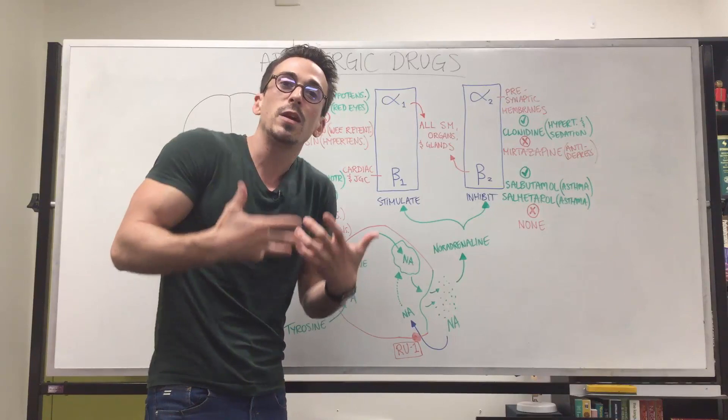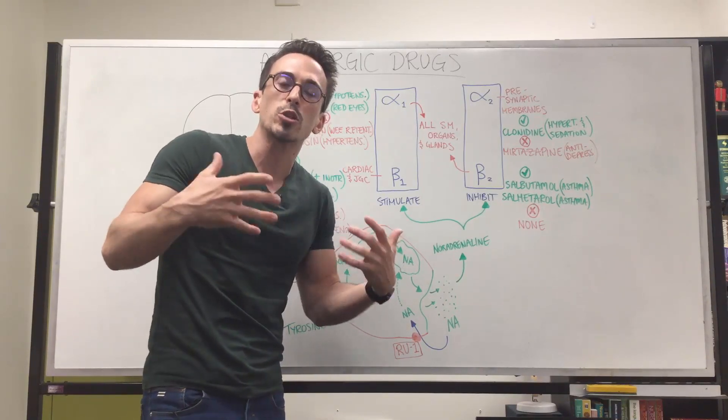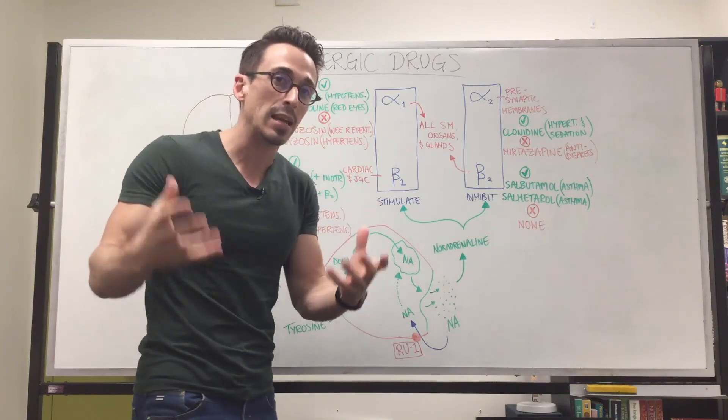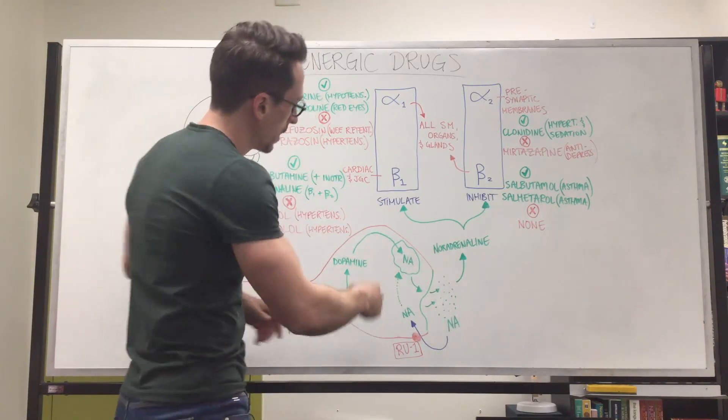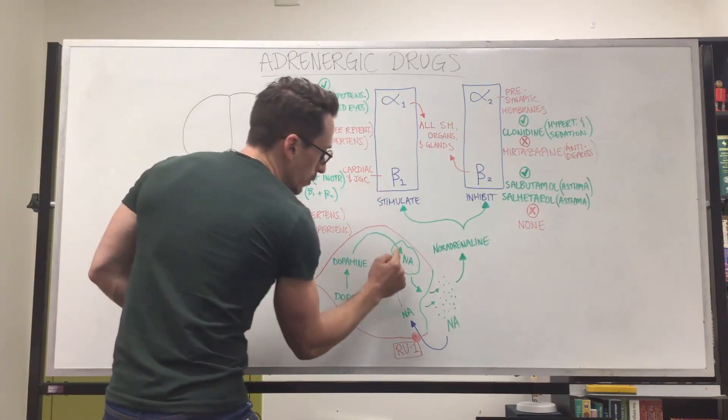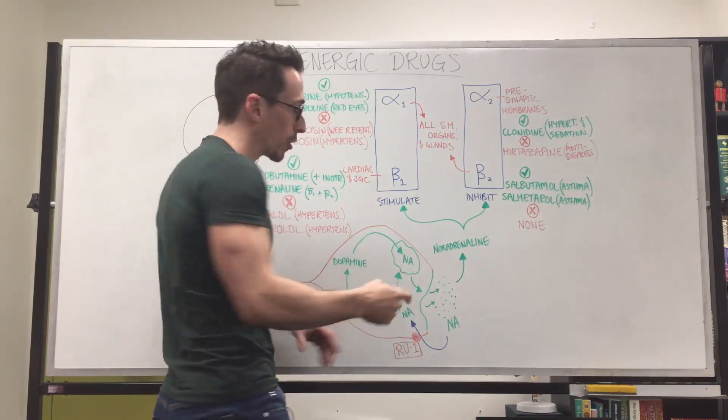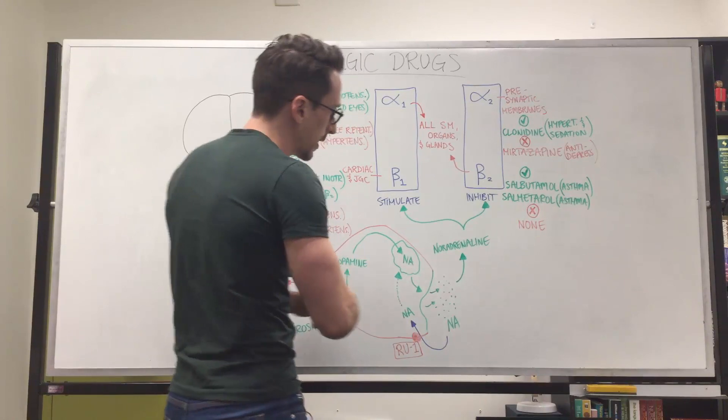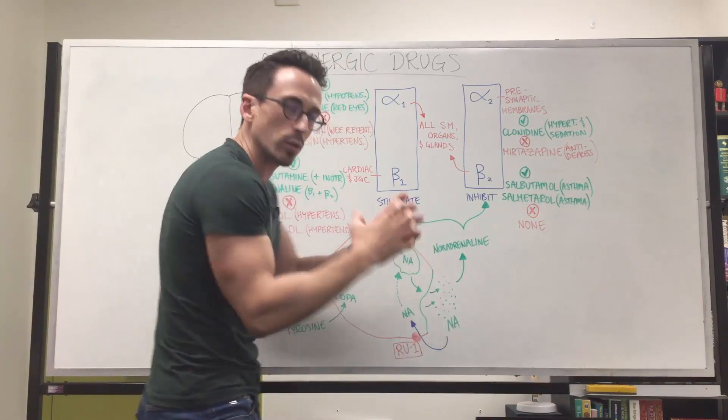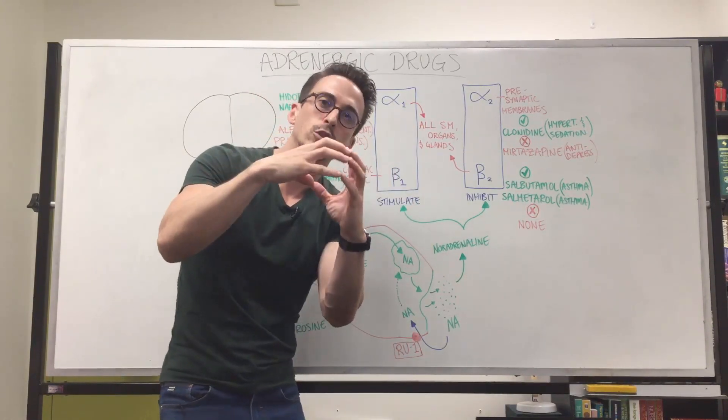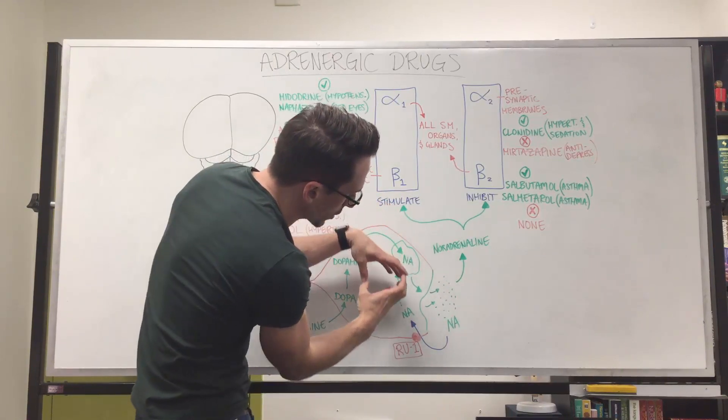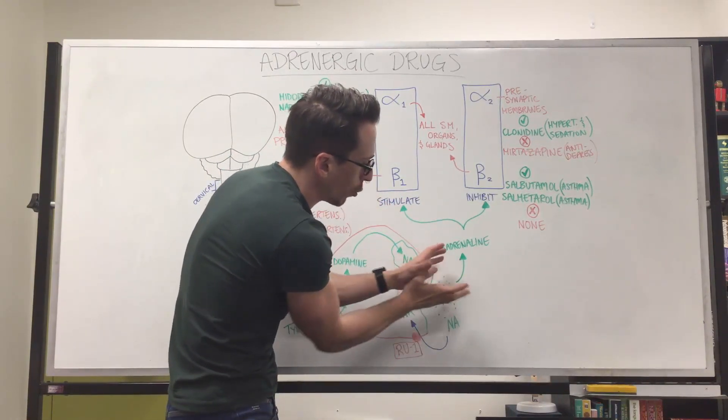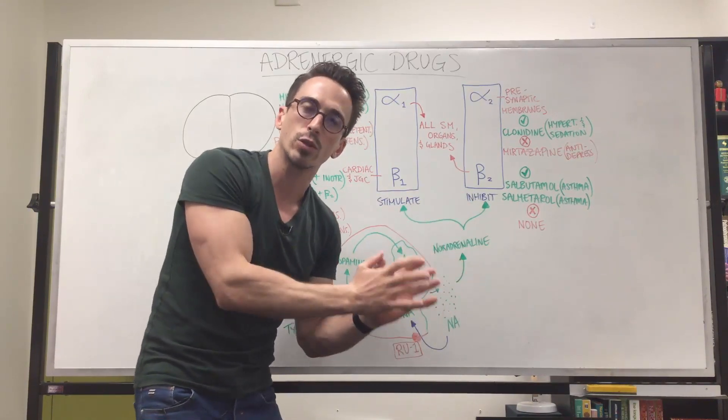Dopamine we know is that feel-good molecule but it does so much more. It aids in physical movement as well amongst many other things such as reward. Now dopamine actually turns into noradrenaline. So dopamine is the precursor for noradrenaline. Noradrenaline, also known as norepinephrine if you're in the States, jumps into a vesicle. A vesicle is a membrane-bound structure that can then travel to the end of the neuron, bind and release its contents being all that noradrenaline out in an area called the synapse.